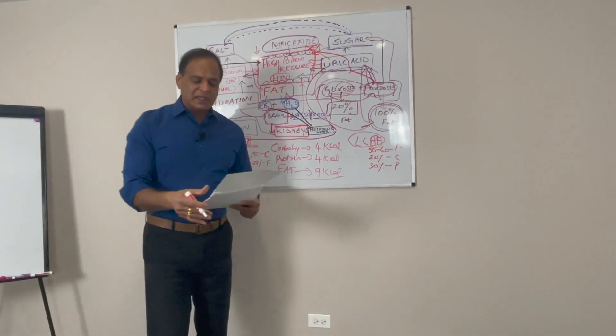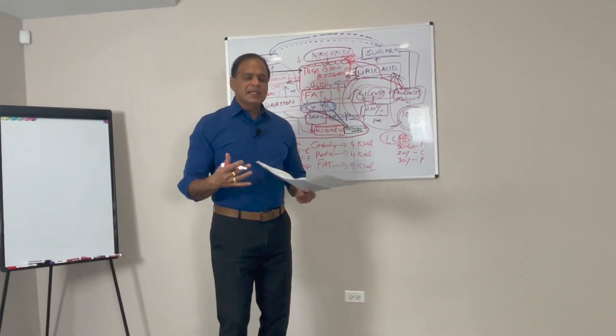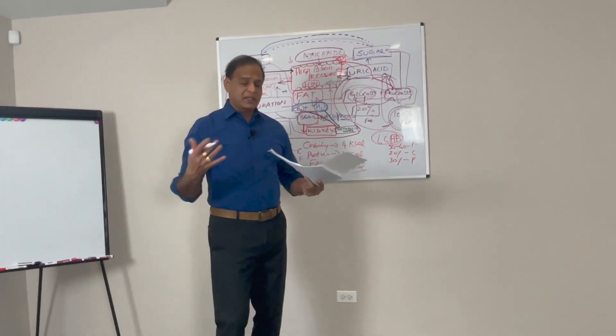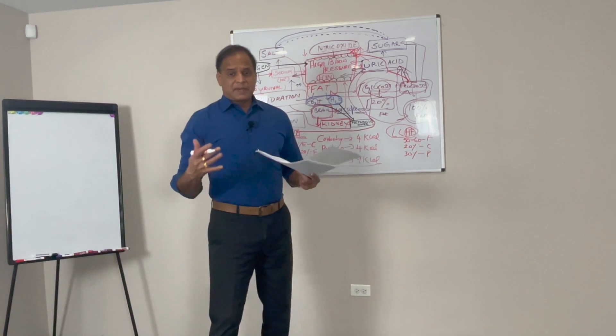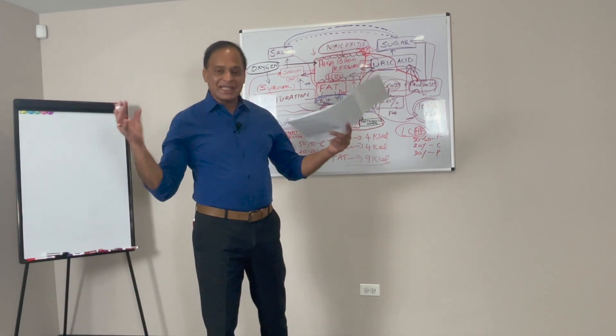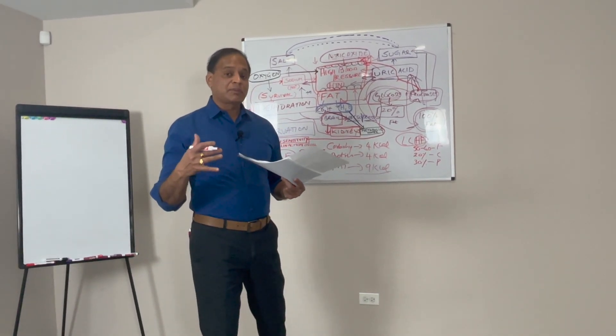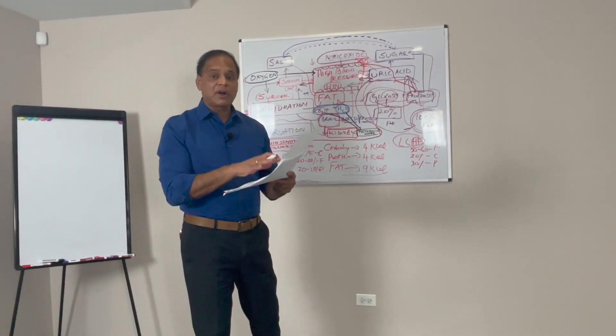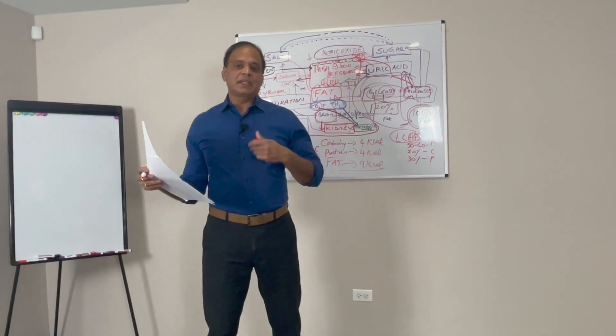When we say fat and carbs we generally don't talk about what type because there are carbs that are very favorable like vegetables above ground, but there are starchy vegetables or processed carbs like bread, pasta, rice, corn, wheat - high grain foods which are processed. Those are the carbs that are not very helpful for insulin resistance and diabetes. They have not gone into those details, only the quantity.